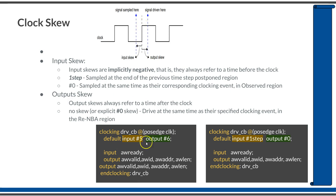In the same way, default output skews are always referred to a time which is after the clocking event. So if you define an output skew like '#6', this will drive the signal 6 time units after the positive edge of the clock.